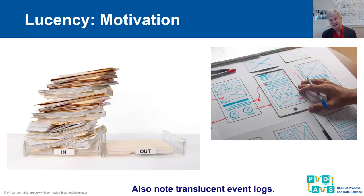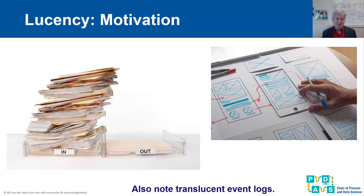Lucency is a very relevant property. I got this idea to study it, and it was surprising to me that it had not been researched before, given how broad and deep Petri net theory is. It seems nobody had ever looked at the problem of lucency, yet it is a very natural property: if we see the set of enabled transitions, can we deterministically determine what the internal state is?